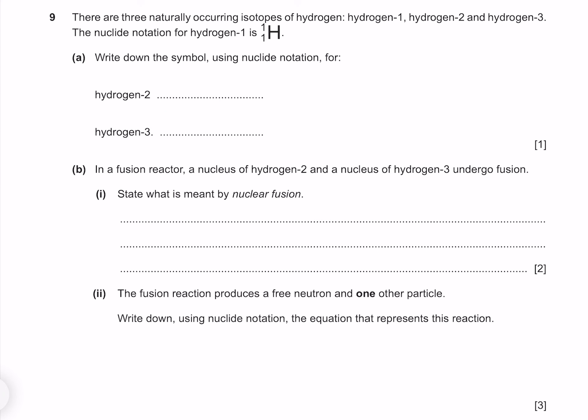There are three naturally occurring isotopes of hydrogen: hydrogen-1, hydrogen-2, and hydrogen-3. Write down the symbol using nuclide notation for hydrogen-2 and hydrogen-3. Both are hydrogen so we use the symbol H, and the atomic number remains 1. Hydrogen-2 has an extra neutron giving an atomic mass of 2, and hydrogen-3 has two neutrons giving an atomic mass of 3.